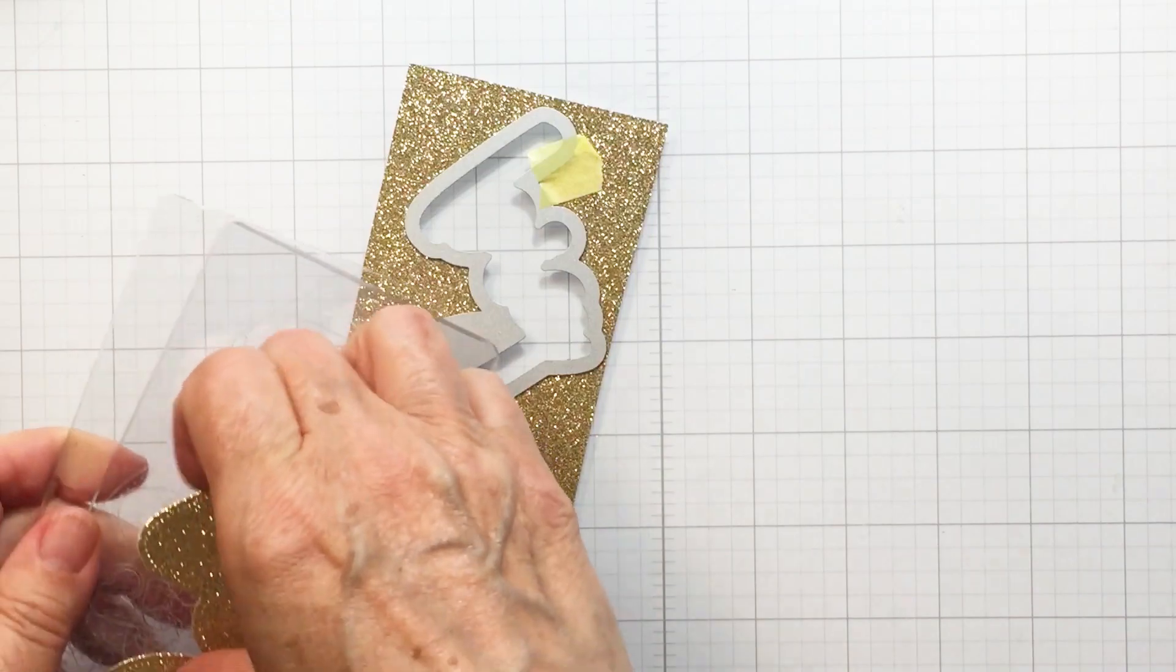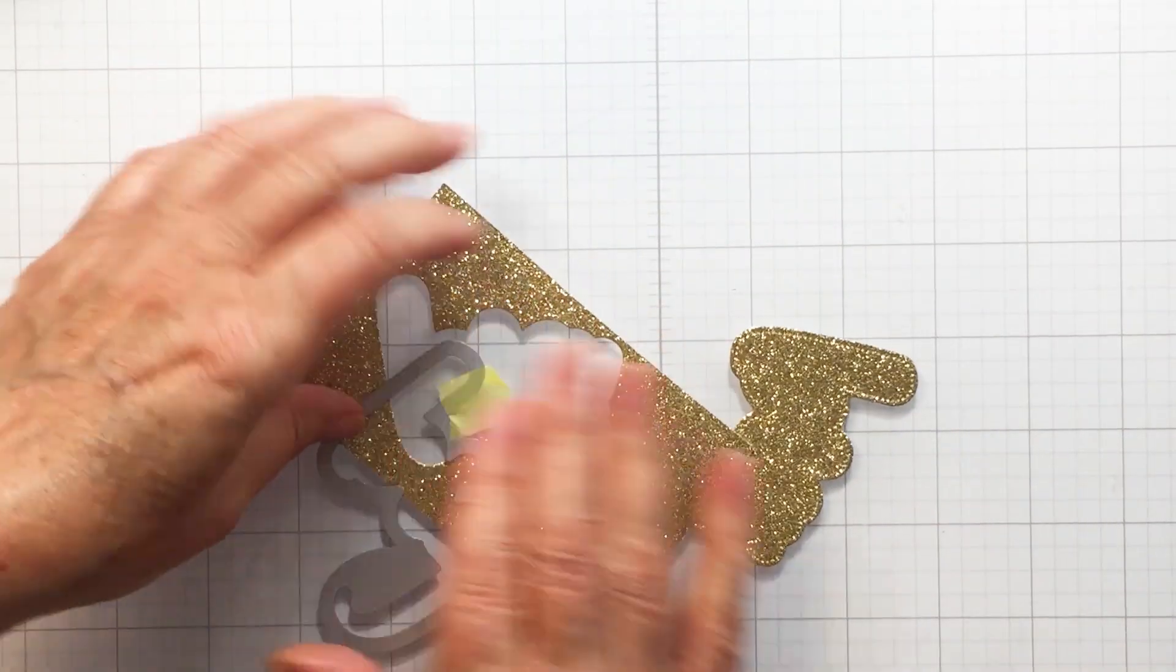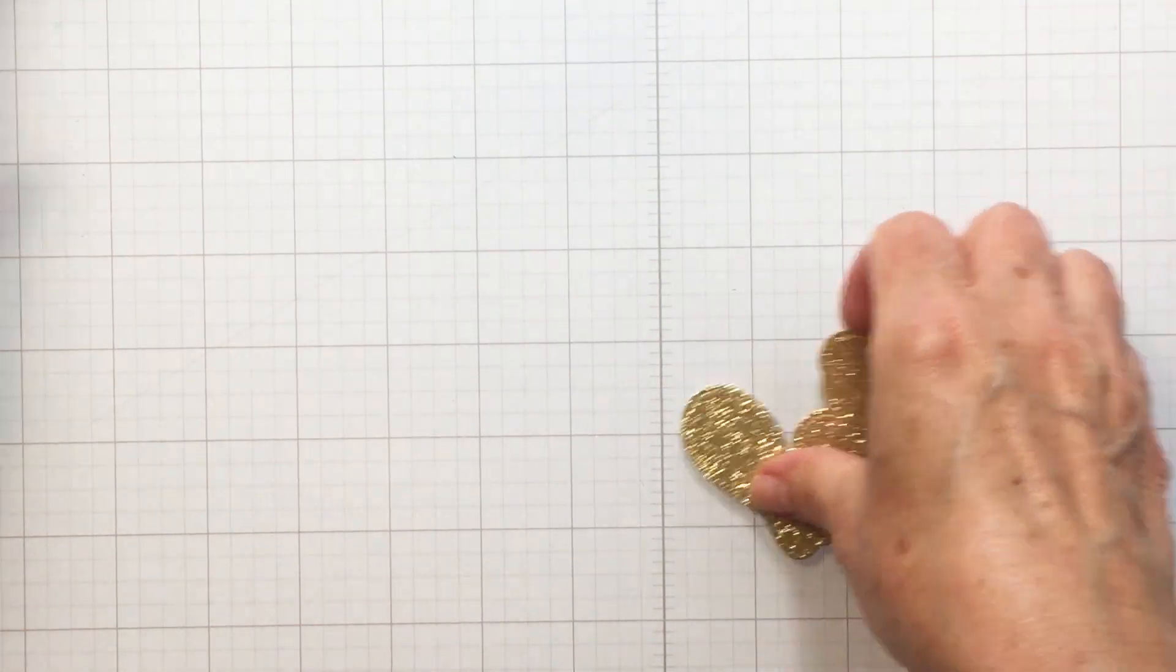So I do end up cutting off that first layer again with some white cardstock and then you'll see that when I go to put these together. But I like the little added sparkle with the gold glitter cardstock from the largest shadow of the word 'big.'